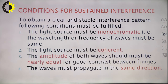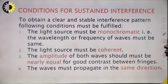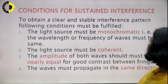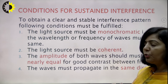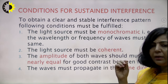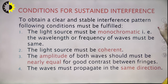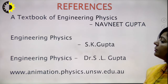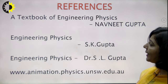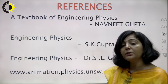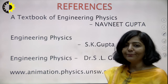To obtain a clear and stable interference pattern, the following conditions must be fulfilled: the light source must be monochromatic (single wavelength); it must be coherent (phase difference zero or constant); the amplitudes of both waves must be nearly equal for good contrast between fringes; and the waves must propagate in the same direction. In the next lecture, we will start with interference in thin films of uniform thickness.